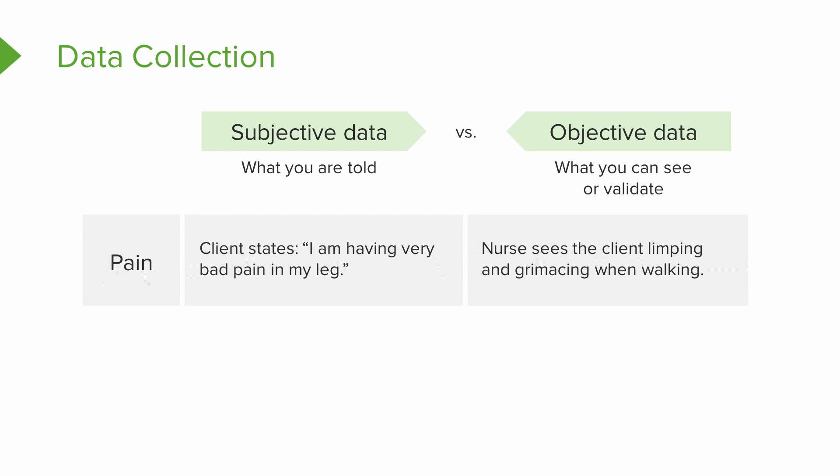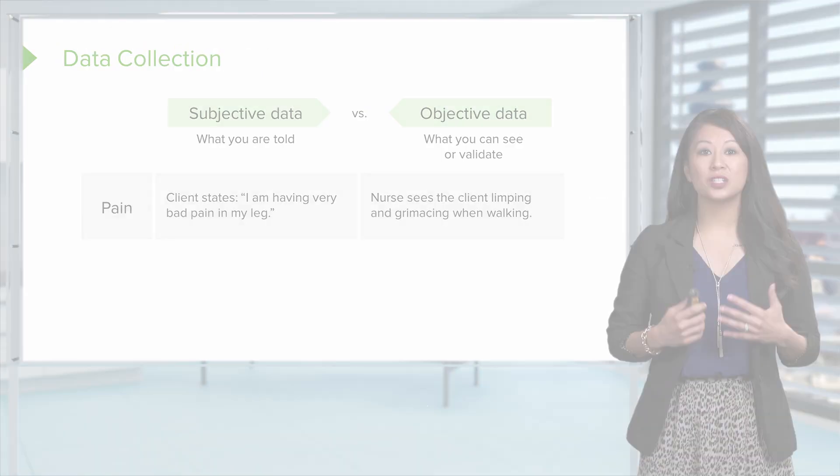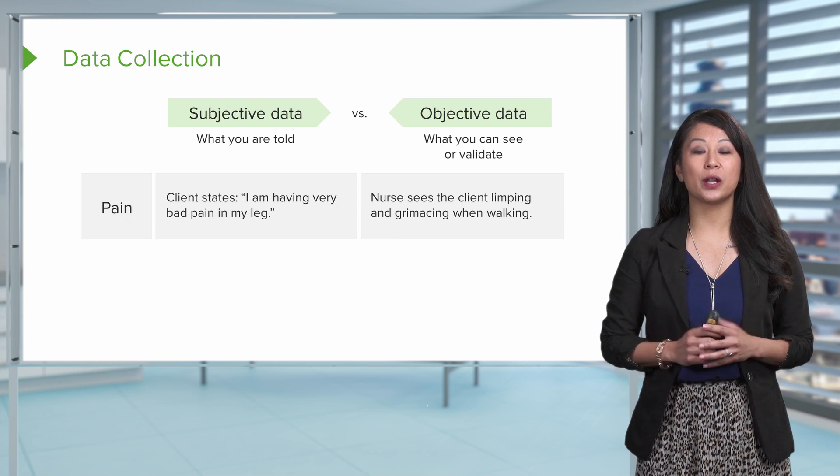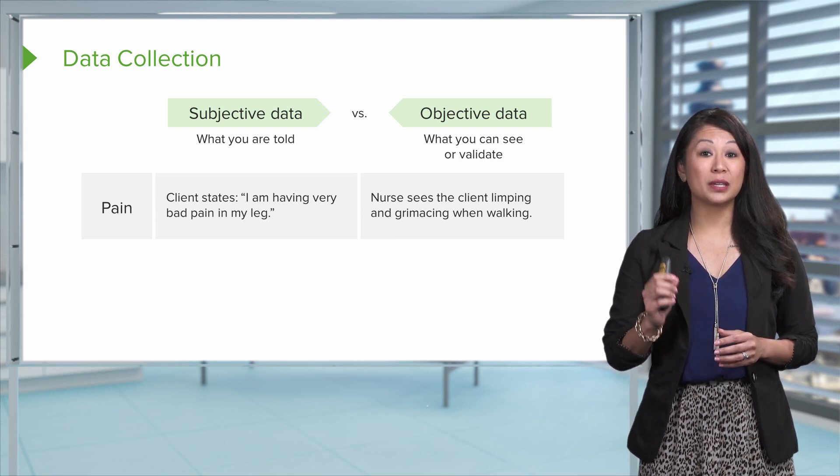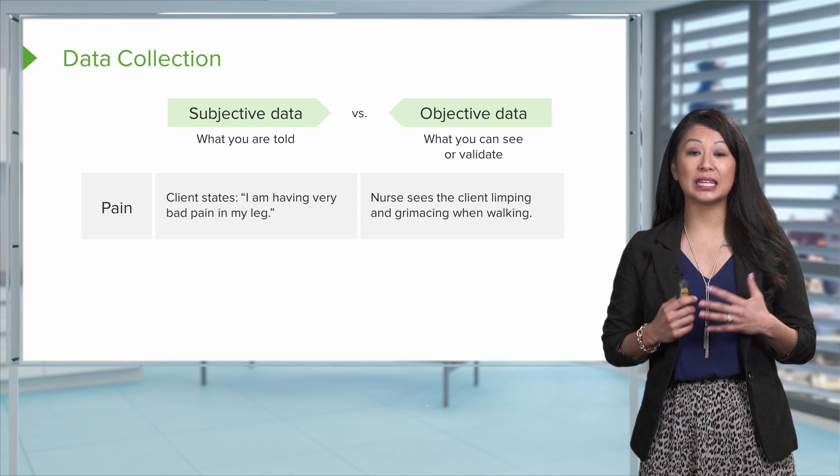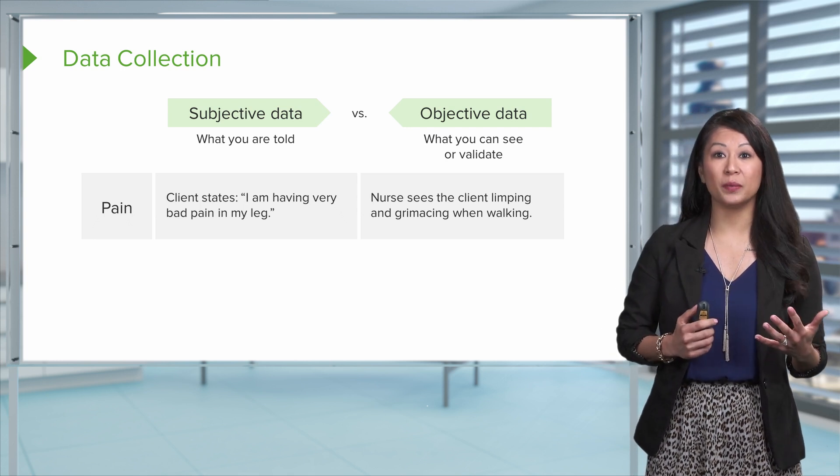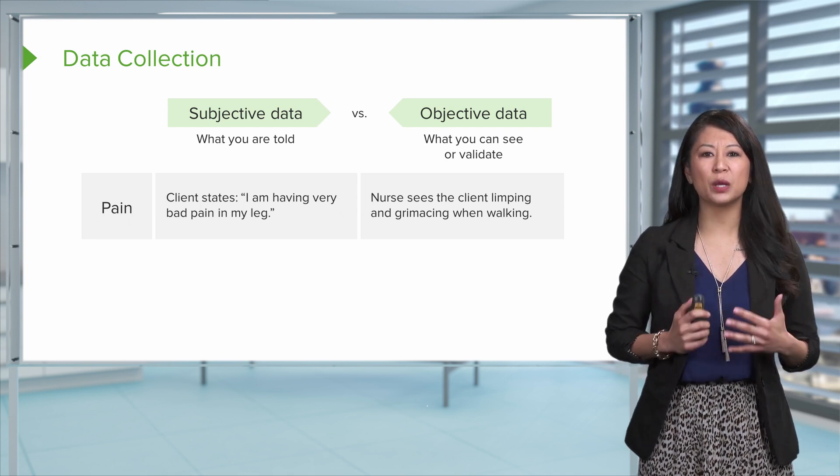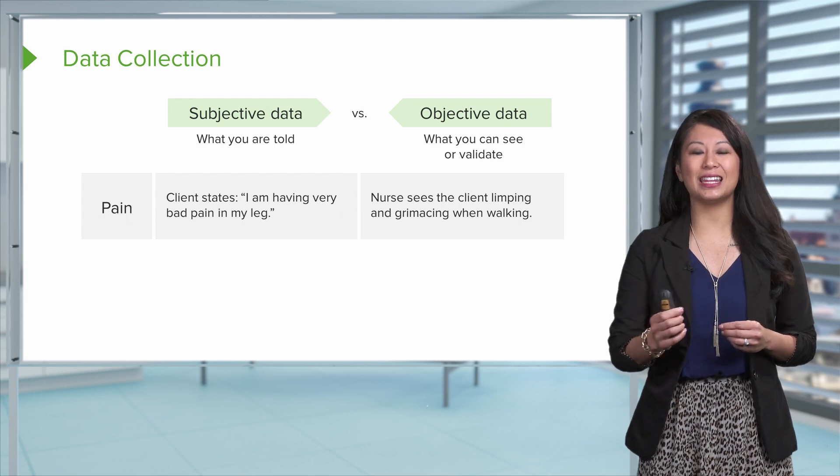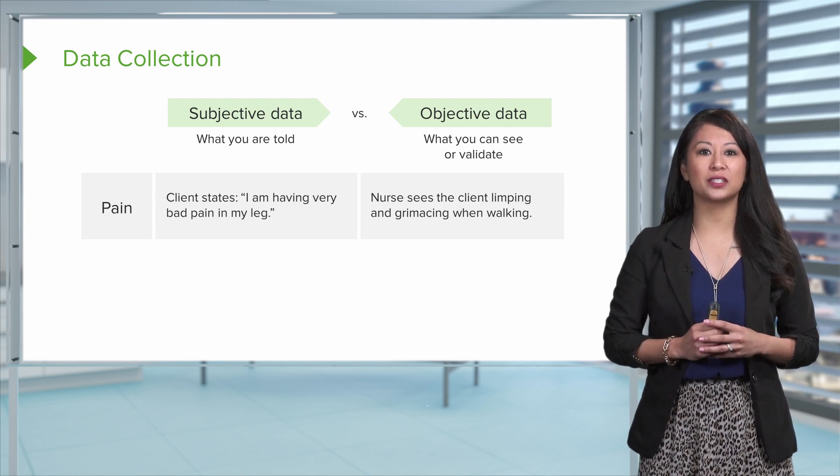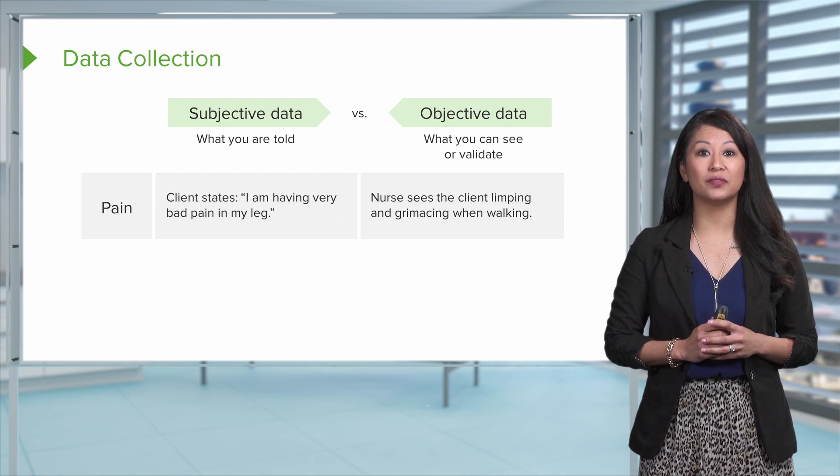So here's a classic example. Pain, for example, such as my patient may tell me I'm having very bad pain in my leg. And a lot of times, subjective data is what the patient's going to tell you. Such as I'm having very bad pain in my leg. Well, the objective data would be if the patient goes and gets up and walks to the bathroom, and you see them grimacing or limping when they're walking, I can tangibly and objectively see that as a nurse, and that's what I would document as my objective data.